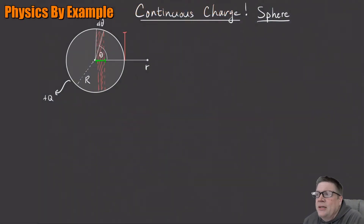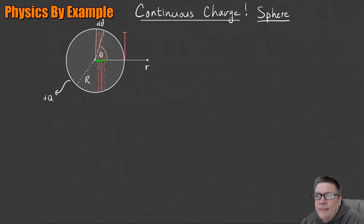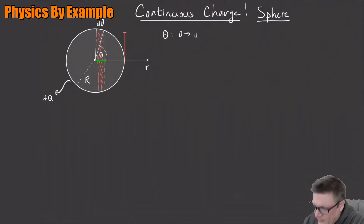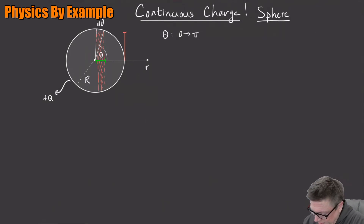The red thing is our ring, and we're going to integrate from theta equals zero. Theta is going to go from zero to pi — not two pi — because if we take theta from zero to pi, we sweep out all those rings of different sizes. Here's one, and here's one — we're just looking at the cross-section of these rings.